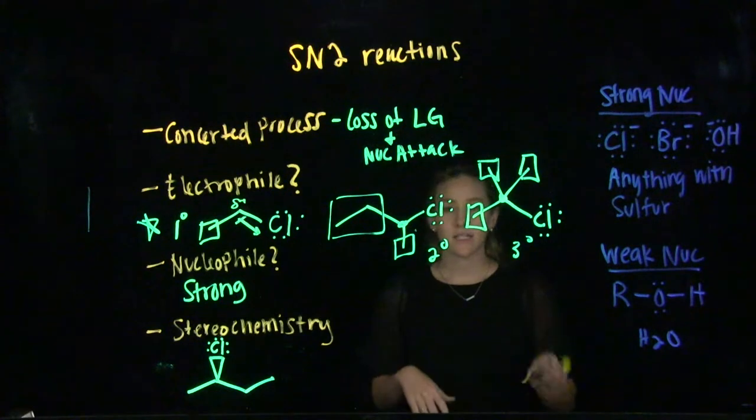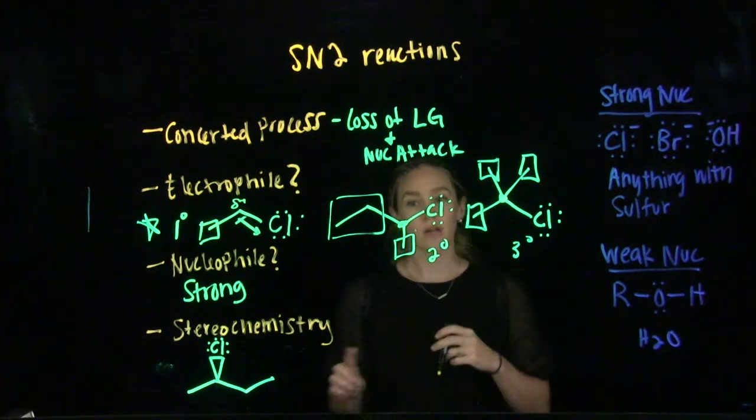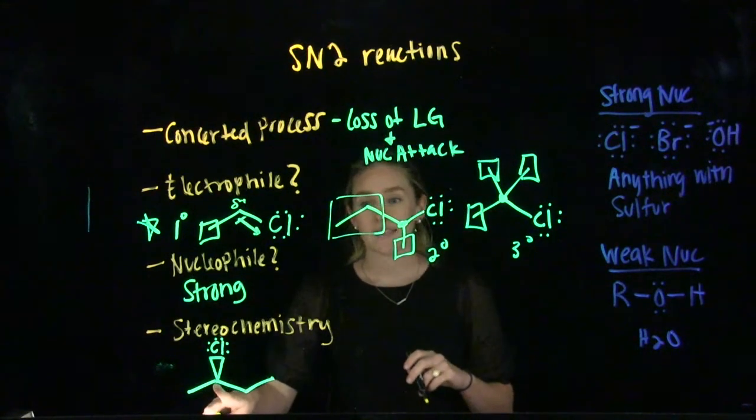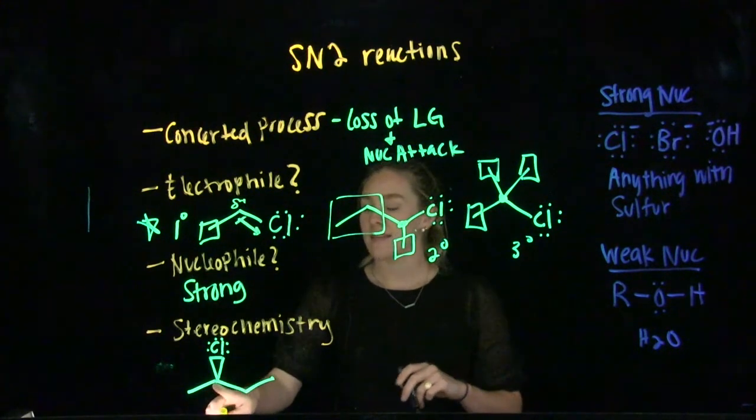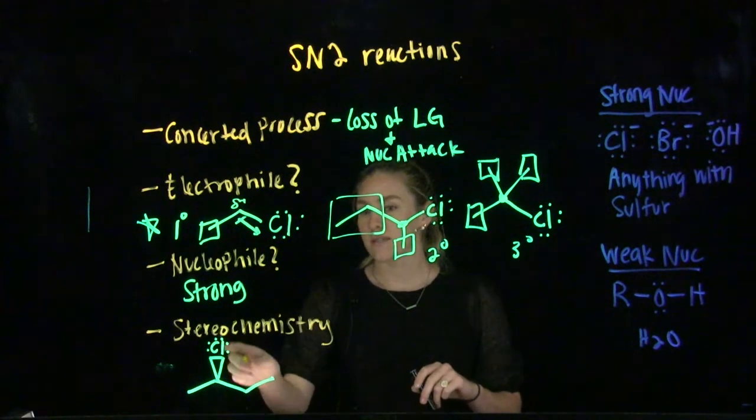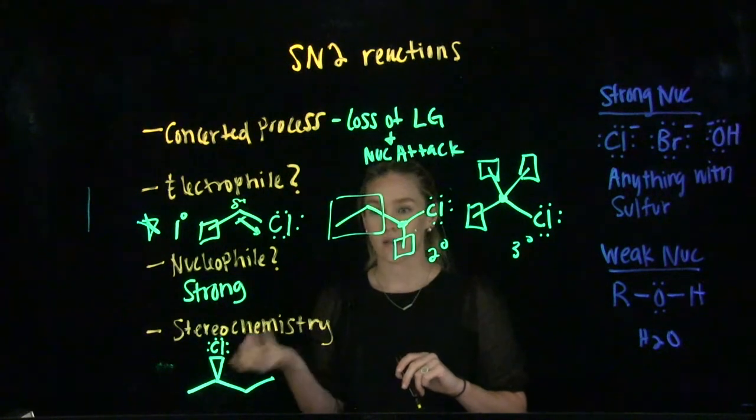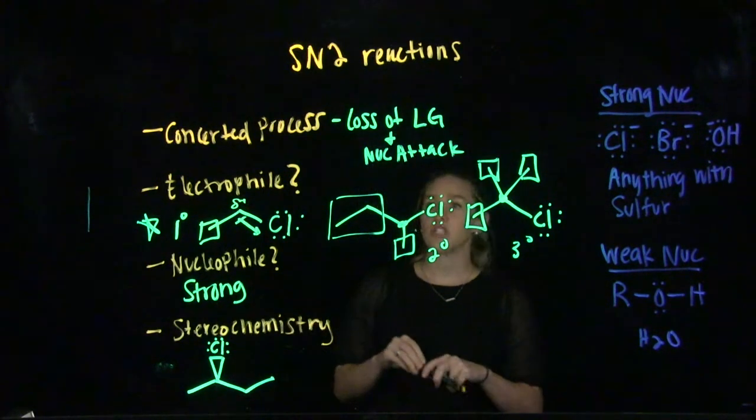Another big concept with SN2 reactions that we need to talk about is stereochemistry. Sometimes your electrophilic center right here is chiral. Notice that this carbon or electrophile has four different groups on there, making that a chiral center as well as an electrophilic center.